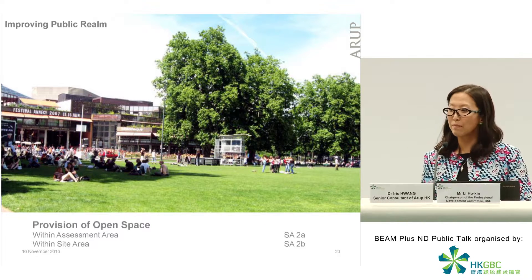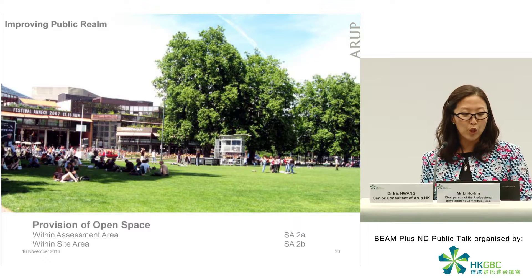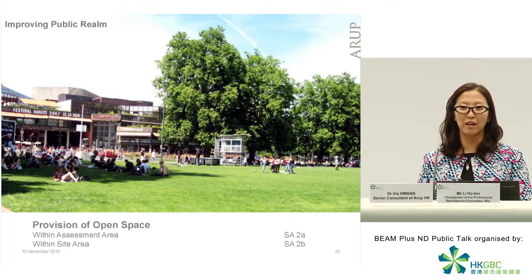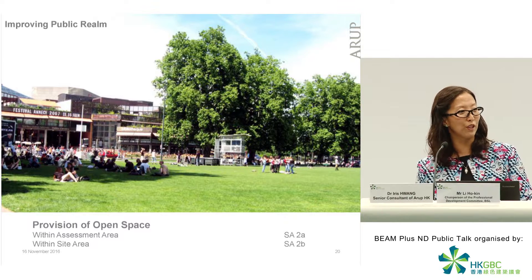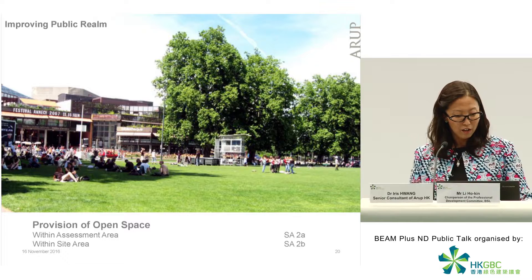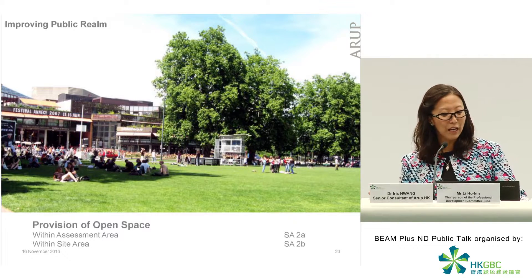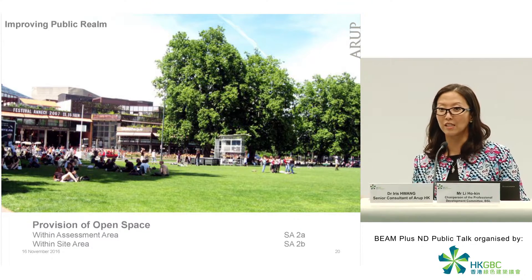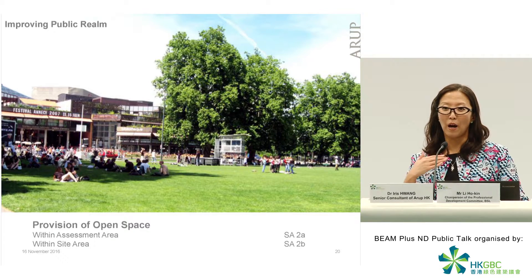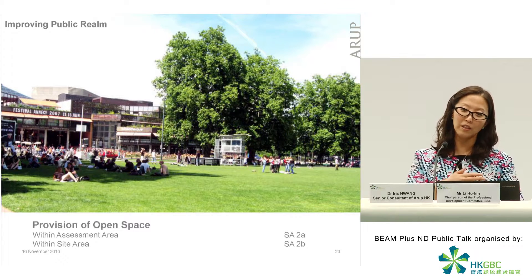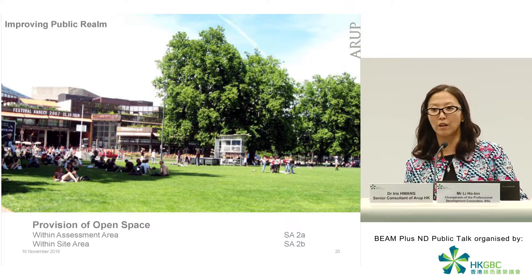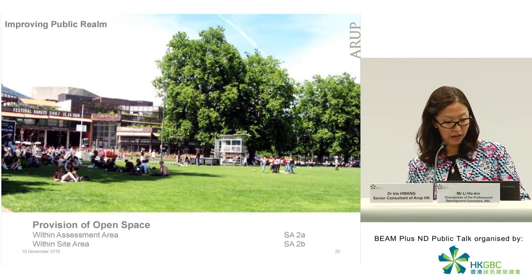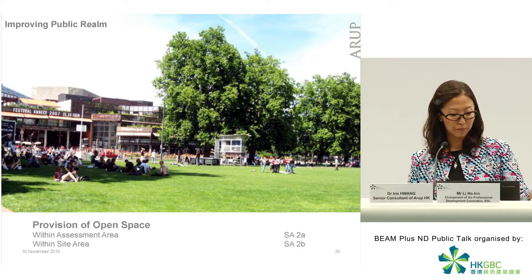Next is improving public realm. Larry mentioned public realm quite a few times, and we know we need more. Everyone is craving more. We have great country parks, but wouldn't it also be nice to have a place where you could go for lunch and sit outside? We're looking at how you might have open space within the assessment area — if there is a park across the road, perhaps your people can go enjoy it, or you could have a picnic. And if you open your own open space to the public, that would double or even multiply the benefits.